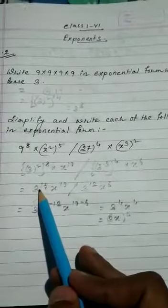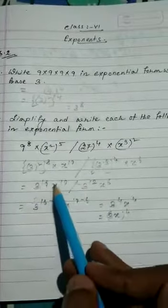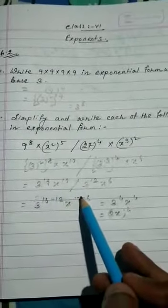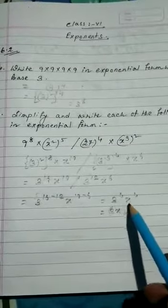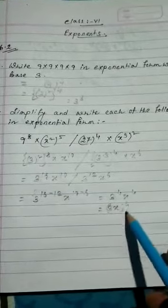Now divide means we have to subtract the powers. So 3 to the power 16 minus 12 times x to the power 10 minus 6. So 3 to the power 4 times x to the power 4 means 3x to the power 4.